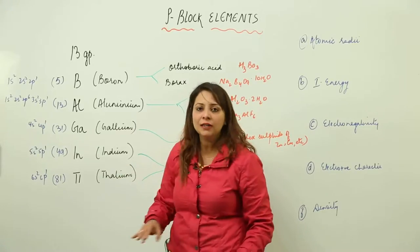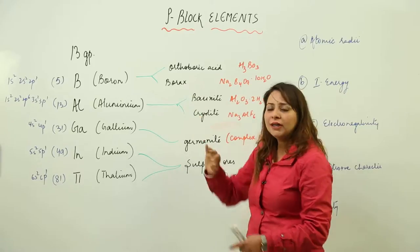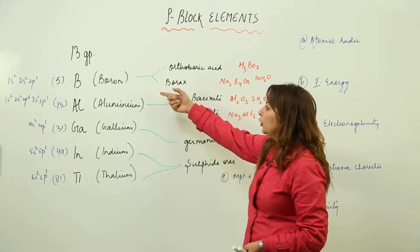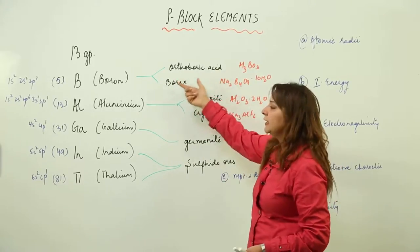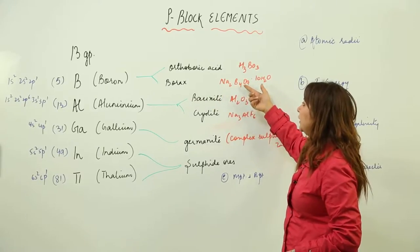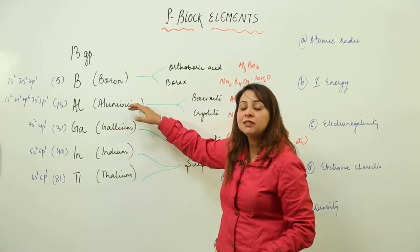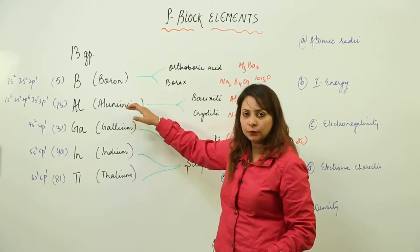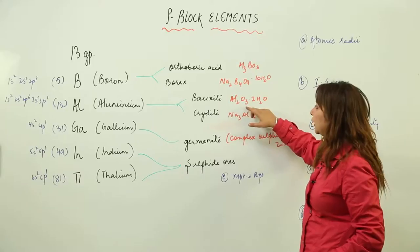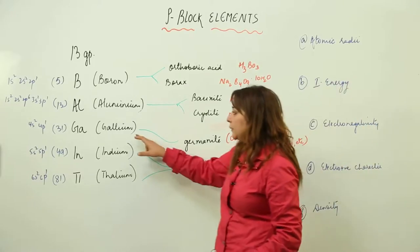If we talk about how they occur in nature: boron occurs as orthoboric acid (H₃BO₃) or as borax (Na₂B₄O₇·10H₂O). Aluminium is the third most abundant metal in the Earth's crust, and it occurs as bauxite ore (Al₂O₃·2H₂O) or cryolite (Na₃AlF₆).